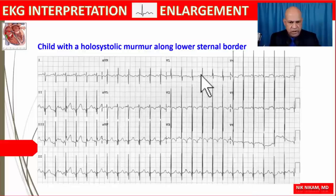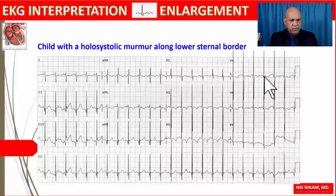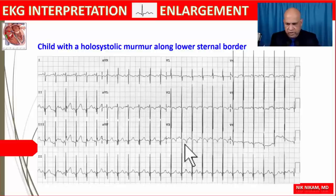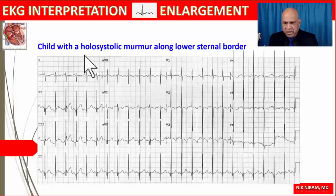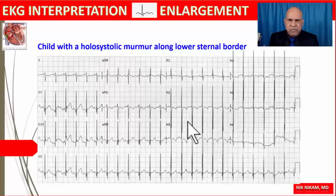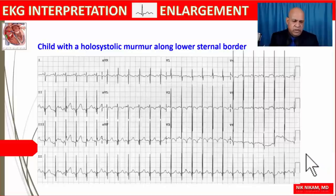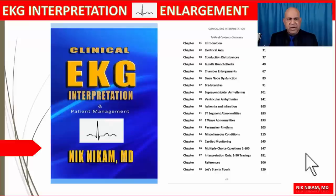Here is another tracing. We have sinus tachycardia at 150 per minute, right axis deviation, right ventricular hypertrophy, left ventricular hypertrophy, non-specific STT changes in the lateral leads, and discordant changes in the anterior leads. The clinical clue: this is a child with a holosystolic murmur along the lower sternal border. A ventricular septal defect produces right and left ventricular hypertrophy in a child with right axis deviation and possible left atrial enlargement, and is associated with a holosystolic murmur heard best at the lower sternal border.